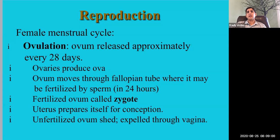The female releases an ovum about every 28 days. The ovum — basically an unfertilized egg — only contains 23 chromosomes, which is half the genetic material needed to make a human being. The other half is provided by the sperm. That's ovulation: the release of this ovum by the ovaries. Ova is the plural for ovum.